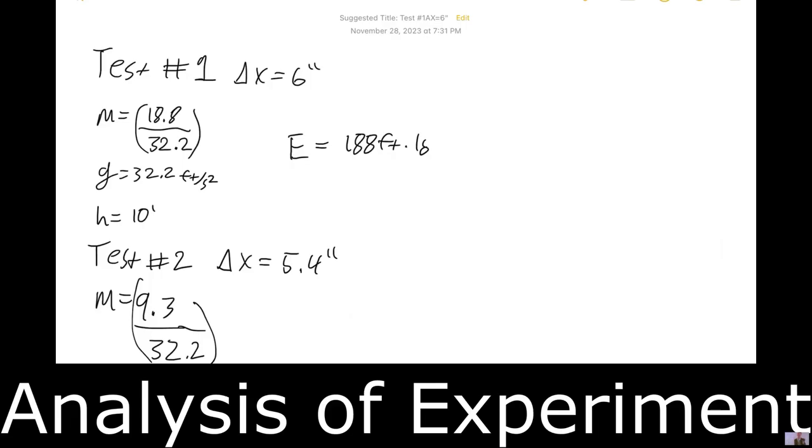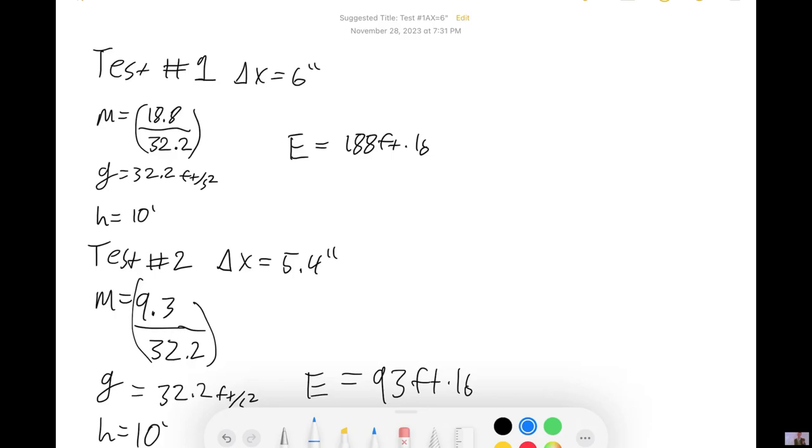Going on to our calculations, we're going to start with energy. On the first test, we have a weight, a mass that we measured on a scale at 18.8 pound mass. We divide that by 32.2 to get our slugs. We have our gravity, 32.2 feet per second. Our height is 10 feet. If we plug this into our energy equation MGH, this gives us 188 foot-pounds.